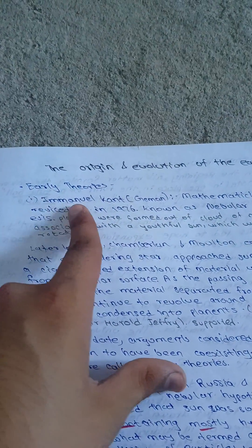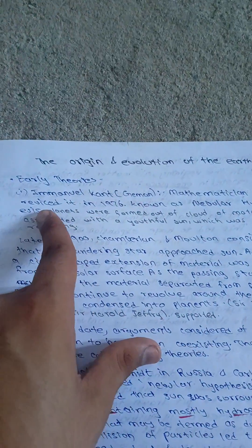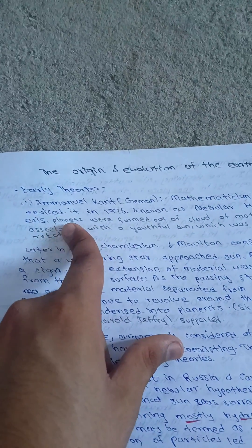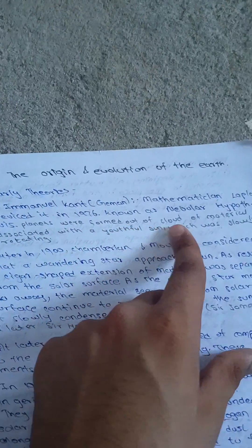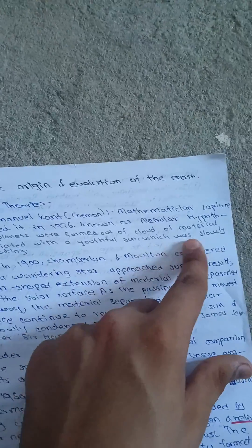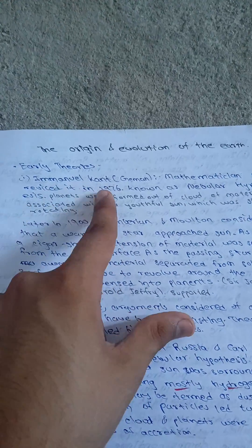Early theories. Immanuel Kant, mathematician Laplace, revised it in 1976, known as the Nebular Hypothesis. Planets were formed out of a cloud of material associated with a youthful Sun, which was slowly rotating. So, this was the theory of Immanuel Kant.